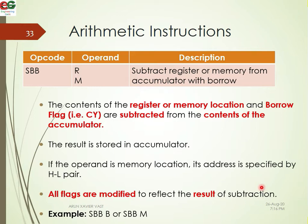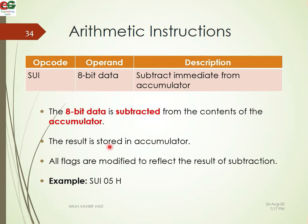SBB is subtract register from accumulator with borrow — it uses the carry flag as a borrow. The carry flag is subtracted along with the register content from the accumulator. SUI is subtract immediate data from the accumulator, similar to the add immediate instruction.